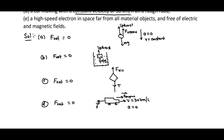Coming to E: a high speed electron in space far from all material objects and free from electric and magnetic fields. Being far from all material objects means gravitational force is 0. Free of electric and magnetic fields means there is no electric force and no magnetic force acting on it. So F_net is equal to 0 on the electron.